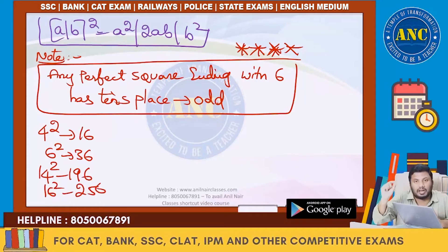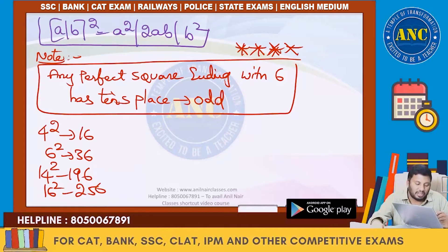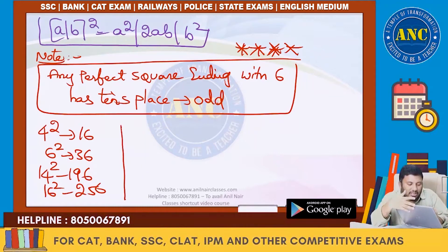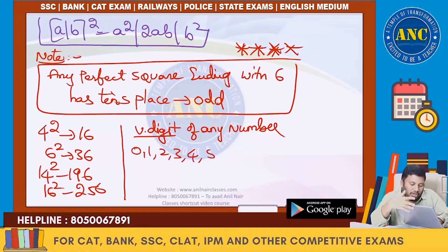Any perfect square — the only perfect square where the tens place will be an odd number is when the unit digit is 6. The unit digit of any number will be from 0, 1, 2, 3, 4, 5, 6, 7, 8, or 9.